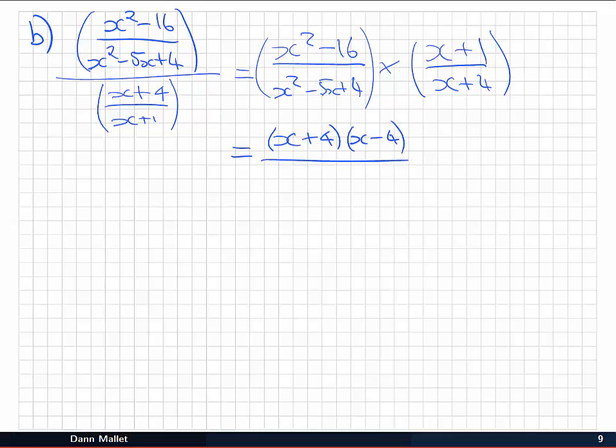And on the bottom, x² - 5x + 4. That's one of those trinomials that we've learnt how to factorise. Now if you're not sure, do give yourself a moment to try this one out. But I'm going to write that down as (x - 4) and (x - 1). We're still multiplying by this same piece here. (x + 1)/(x + 4).